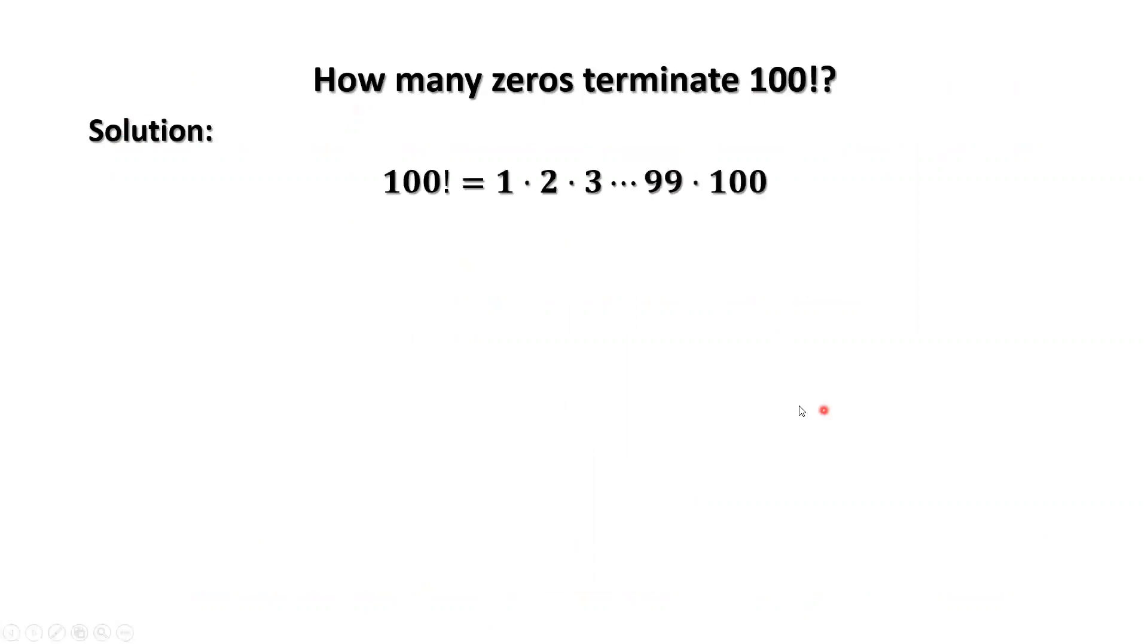By definition, 100 factorial equals 1 times 2 times 3 times... until times 99 times 100. This question is equivalent to finding how many 10 as a factor of 100 factorial. Why? Because each 10 contributes one zero at the end of 100 factorial.